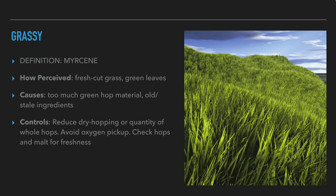Now let's talk about grassy aroma and flavor. This aroma is caused by an essential oil called myrcene. This compound is perceived by us as freshly cut grass or green leaves. The causes of a large amount of myrcene in beer are a large quantity of green hop material used in beer or old or dry ingredients. To lower the myrcene quantity in beer, the brewer should lower the amount of dry hops or whole hops in contact with the beer, also avoid oxidation of the beer and make sure that the malt and hops are fresh.